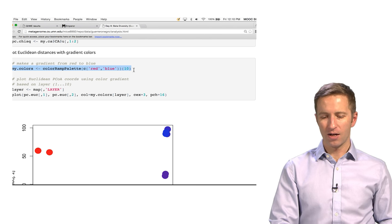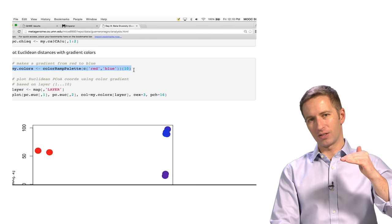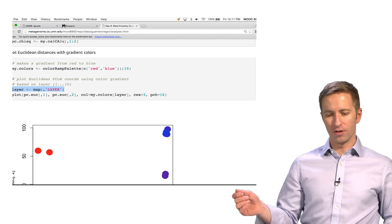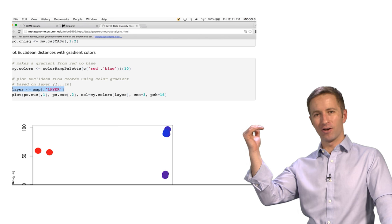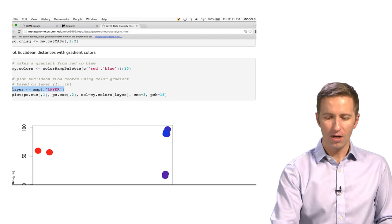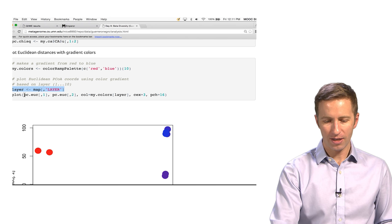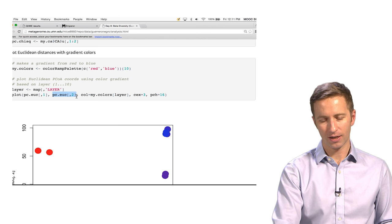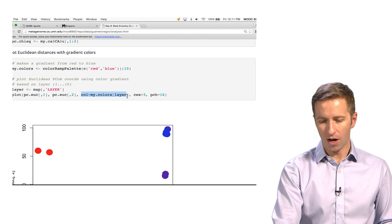I'm making up a color gradient that goes from red to blue that we're going to use to color the principal coordinates plot according to the depth of the samples in that microbial mat. Here's where I pull the depth out, or this is actually which layer the sample was taken from, from that metadata table. And then here's where we plot. So we plot the first coordinates,